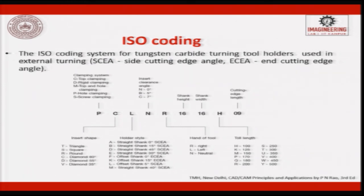For the ISO system for tungsten carbide turning tool holder used in external turning, similar digits are followed. P talks about the clamping system: top clamping, rigid clamping, top and hole, or screw type. C talks about the insert shape, because the tool holder must have the corresponding groove. L talks about the shank: straight shank or offset shank, then clearance angle, then right hand or left hand tool. Then shank height, shank width, tool length, and tool cutting edge. Tool holder and tool are very important and can be bought in the market.